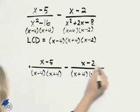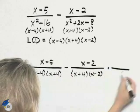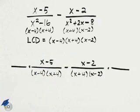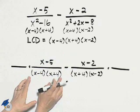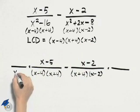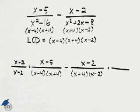I'm going to multiply each of these by a form of 1 that will allow us to get a denominator that matches our LCD. For the first fraction, we have x minus 4, x plus 4. We need the factor of x minus 2. So I will multiply both the numerator and the denominator by x minus 2.